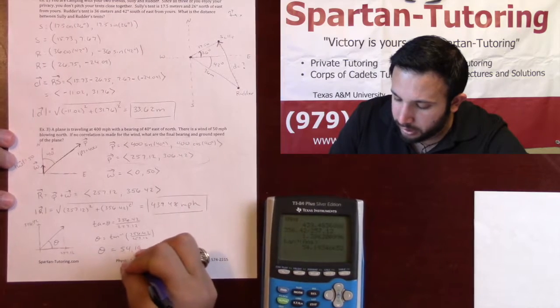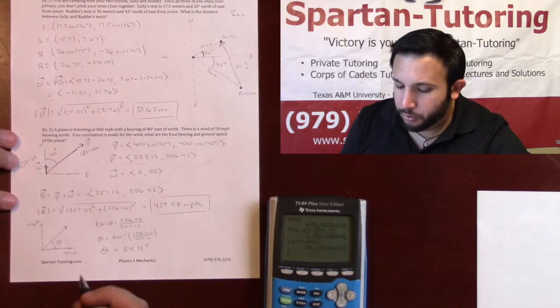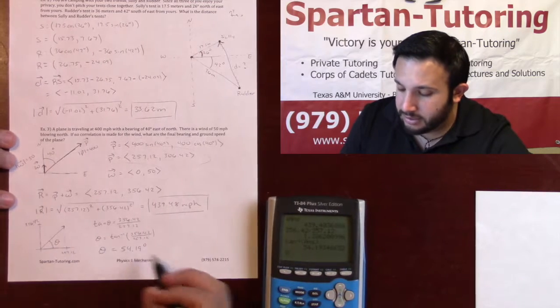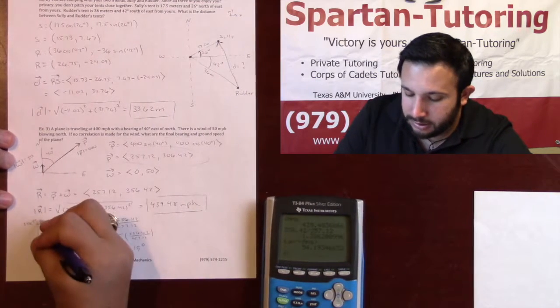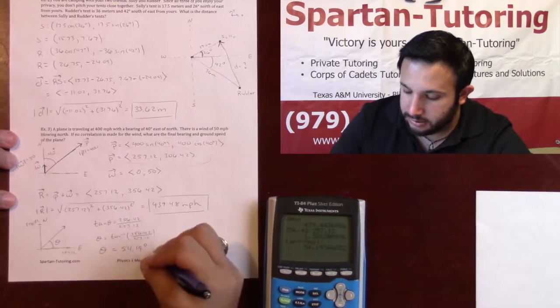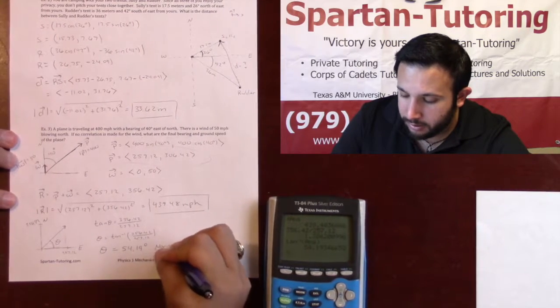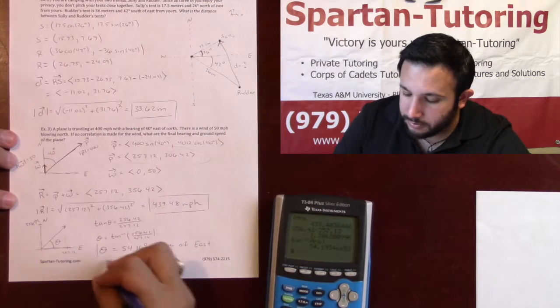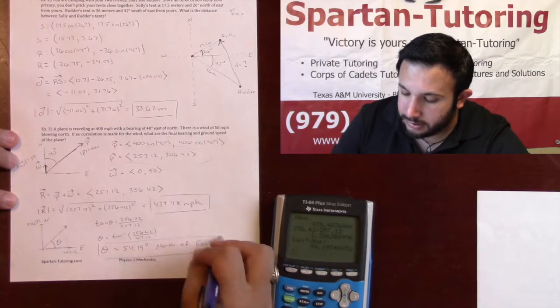So I'm going to get 54.19 degrees, but be careful with the way they want it. The way that I have it, this is 54.19 degrees north of east. So just be very aware of how they want it. In this case, I went ahead and did it north of east, but just be aware of how it's asked.